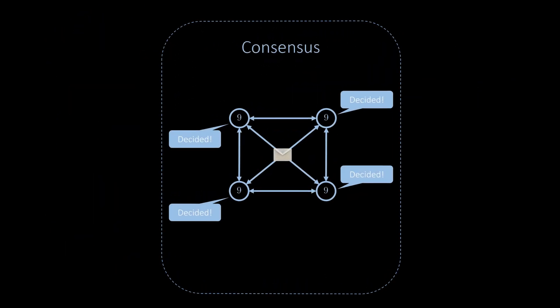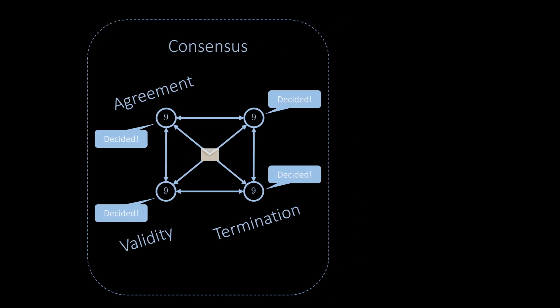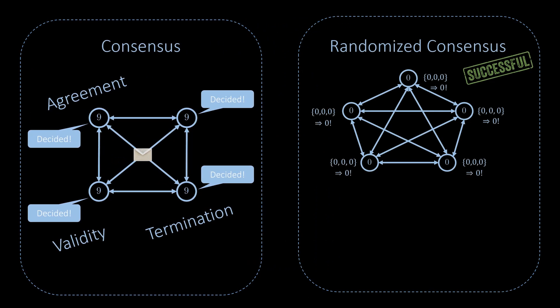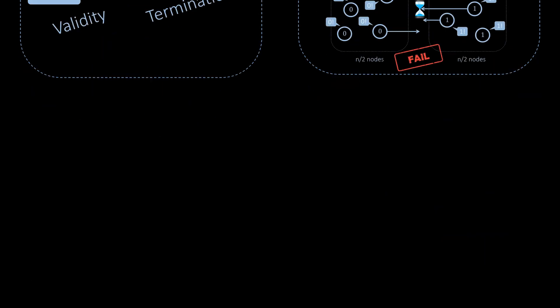Let's summarize what we've learned. We studied the famous consensus problem with the properties of agreement, validity, and termination. While the problem is not solvable in the asynchronous model using any deterministic algorithm, we showed that it is solvable using a randomized algorithm even if fewer than half of all nodes may fail. We also showed that this bound is optimal: if half or more nodes may fail, the problem again becomes unsolvable.